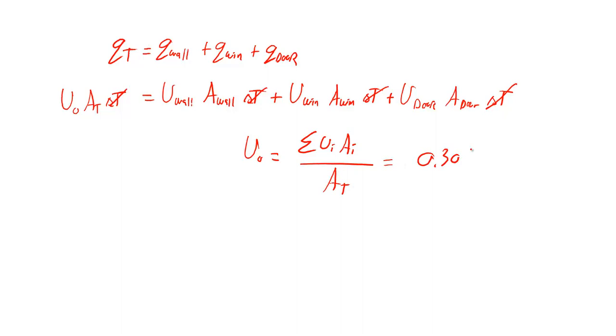To do the math, we should end up with about 0.3 BTU per hour foot squared Fahrenheit, where the total area is 12 by 8 or 96 square feet. I hope that makes sense. This is basically looking at the overall thermal conductance in terms of area.